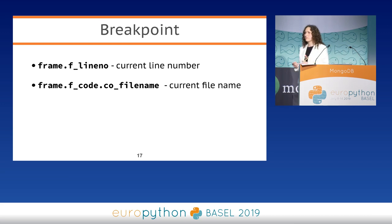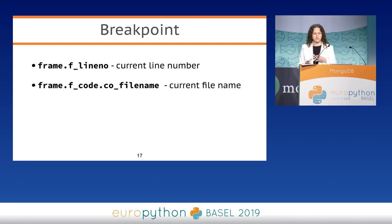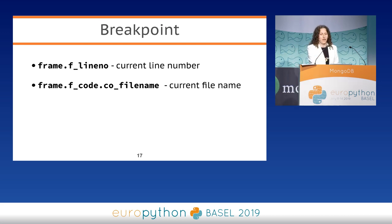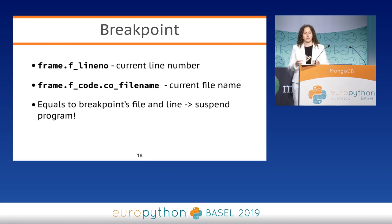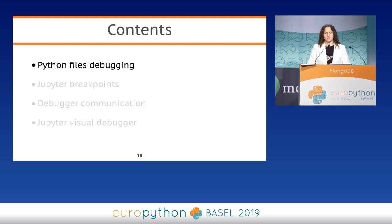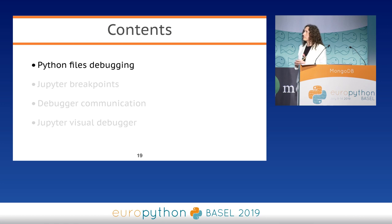How can we use this tracing function to implement breakpoints in our debugger? On each program event, the tracing function receives a frame object, which contains not only line numbers but also the filename of the current code, stored in the code object. A breakpoint also has a filename and a line where the user put it. So on each call, we can compare the breakpoint's filename with the frame's filename, and the breakpoint's line number with the frame's line number, and if these values are equal, we can suspend our program. This is how Python debuggers work and how we use the tracing function to implement breakpoints.